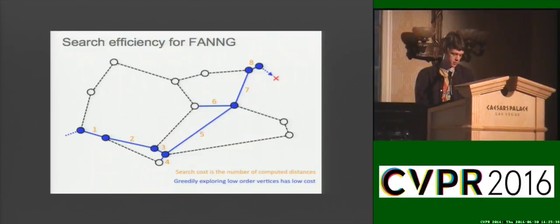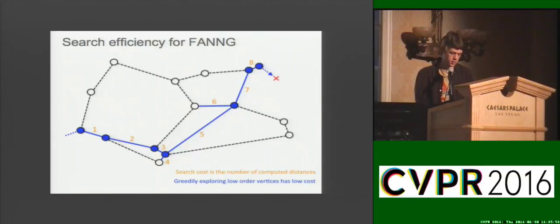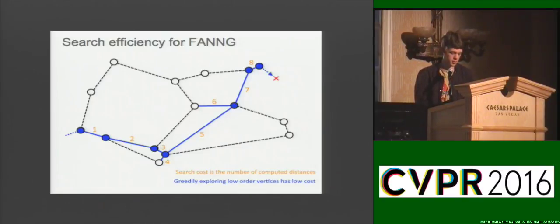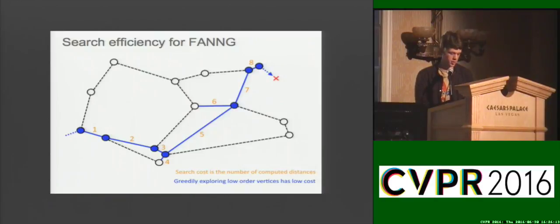Our graphs are constructed with a vertex for each descriptor in the data set, and edges form paths to local neighbours. Performing a greedy search on these graphs helps to reduce the number of visited vertices, and hence also reduces the number of distance calculations for each query. The search involves computing the distance from the query point to the neighbours of the best known vertex. Once we find an edge that brings us closer to the query point, we travel that edge to reach our new best vertex. These edges are evaluated in order from shortest to longest.